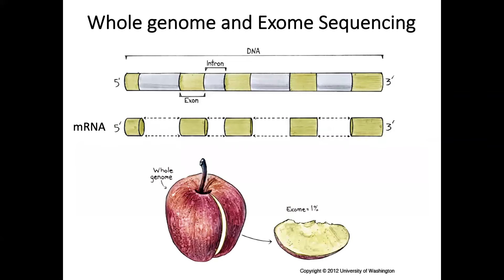Let's get back to the basic structure of genes. A complete gene contains both exons and introns. Intron sequences are spliced out during the splicing event when making the mature mRNA. In the mature mRNA sequence, you only see exons but no introns. Exons are shown in yellow and introns in gray in this diagram.